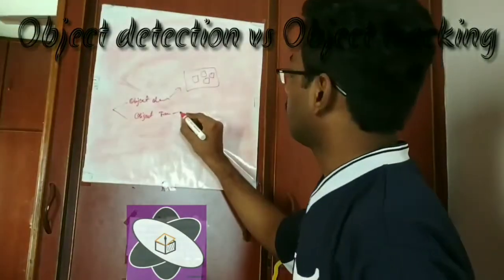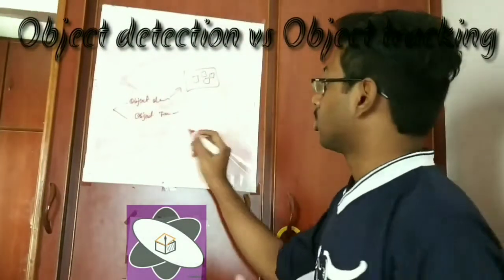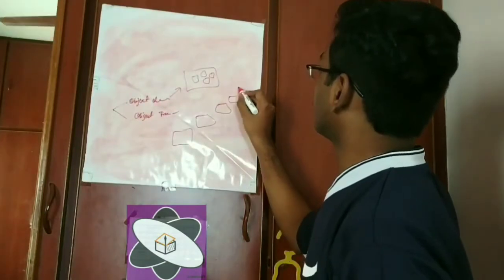But in object tracking, object detection can also be done for video. So for each frame - if we have the first frame, second frame, third, fourth, fifth and so on.